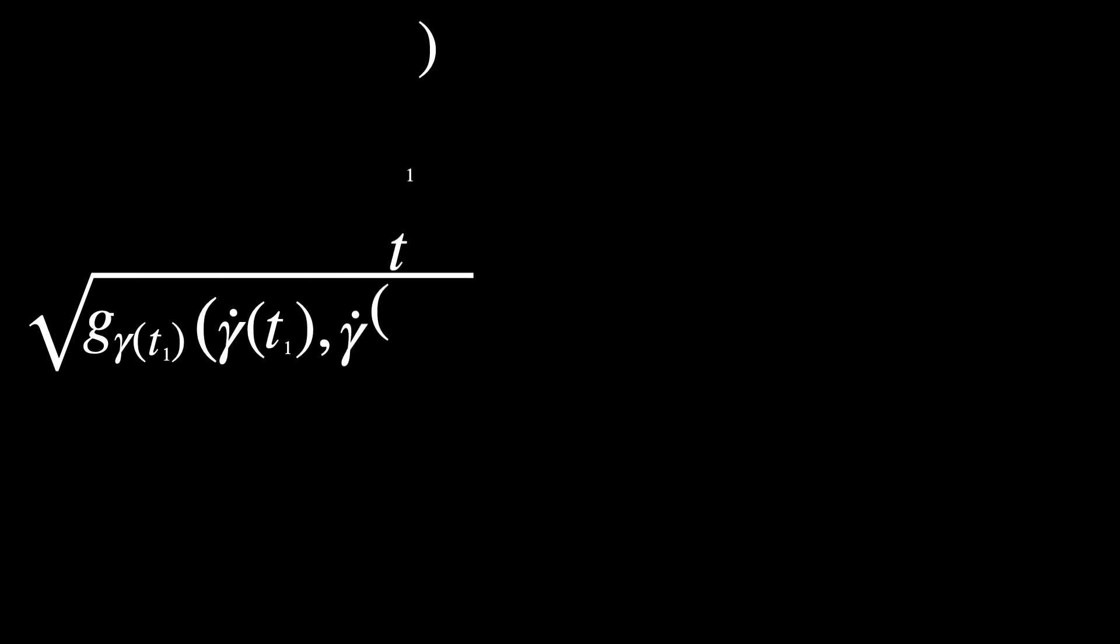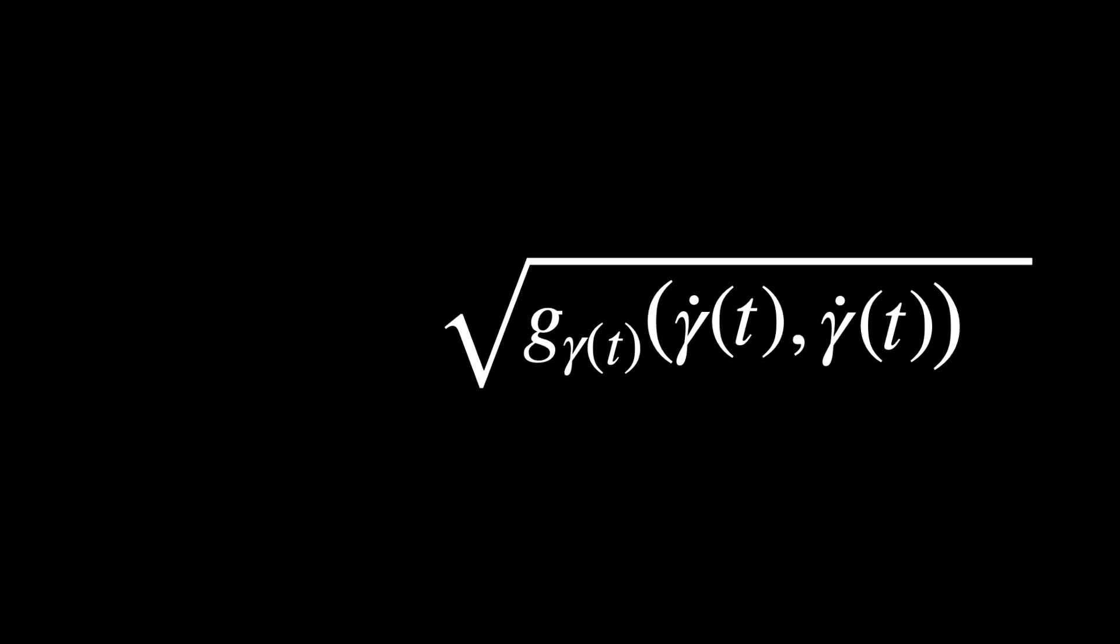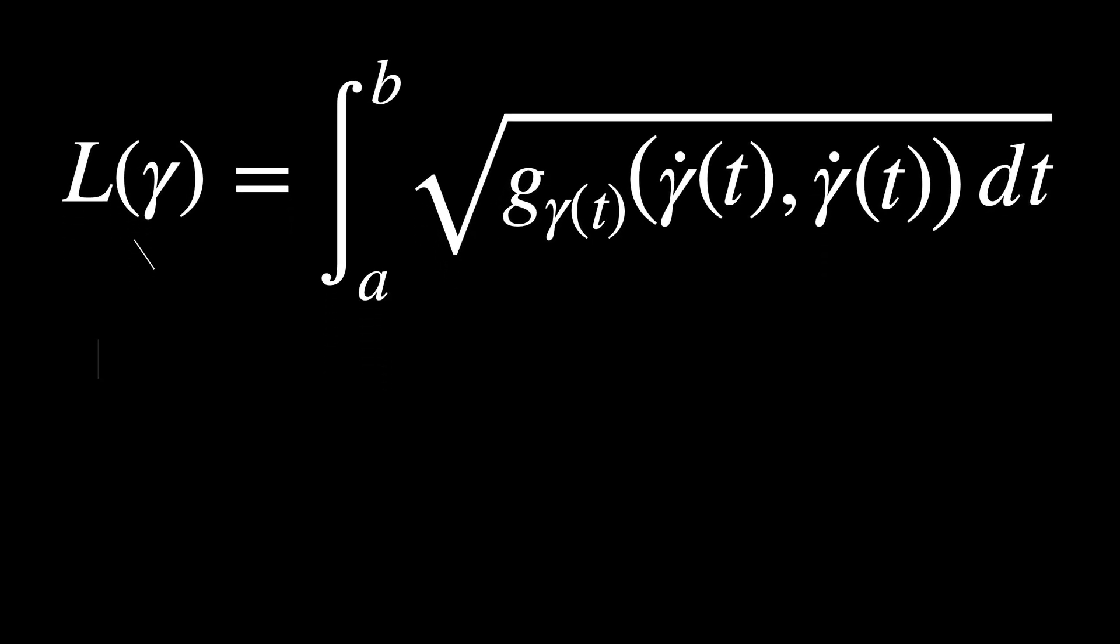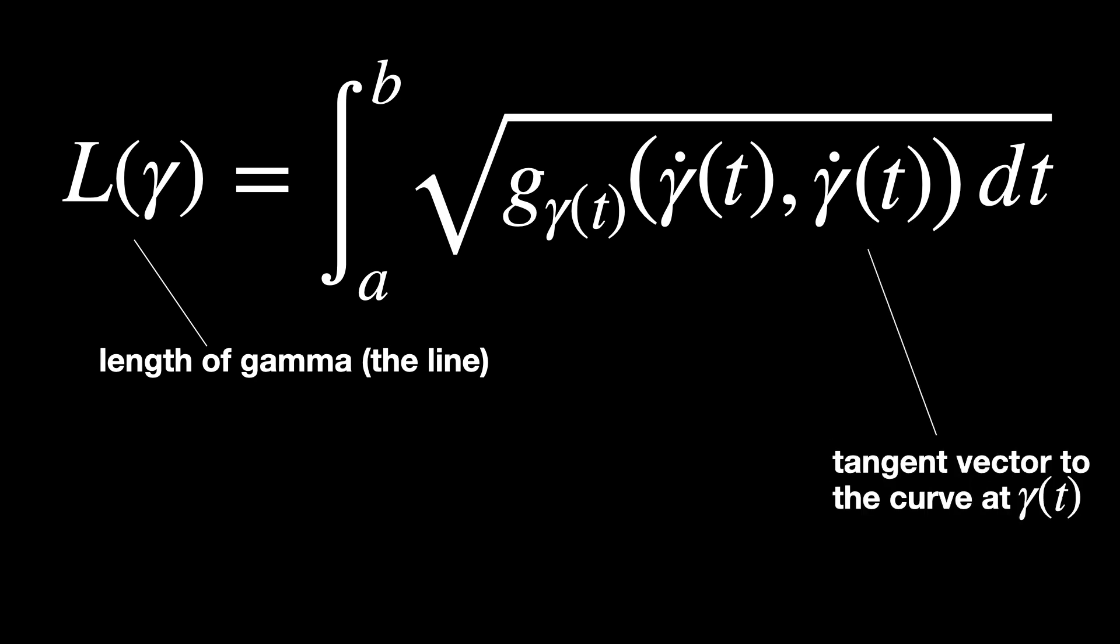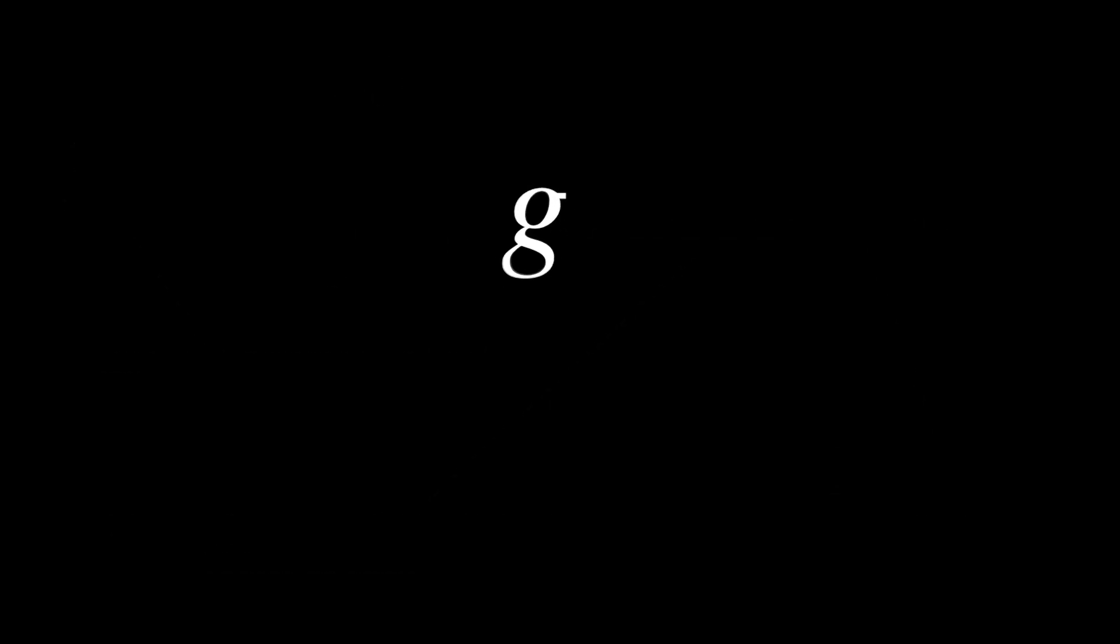Once we find all the individual vectors along the curve, we want to sum them up to find the length of the curve. This is done through the distance formula. This part stands for the length of gamma. And here on the right side, the derivative of gamma of t is the tangent vector to the curve at point gamma of t. And this term right here measures the length of this tangent vector at each point gamma of t.